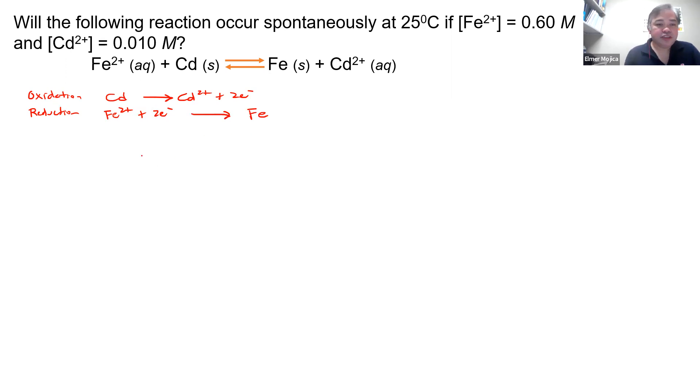And the one that undergoes reduction is the Fe2+. Now, if we're going to base the reaction here, so this is the one that happens in the anode, and this is the one that happens in the cathode. The next thing we're going to do, what's the reduction potential?